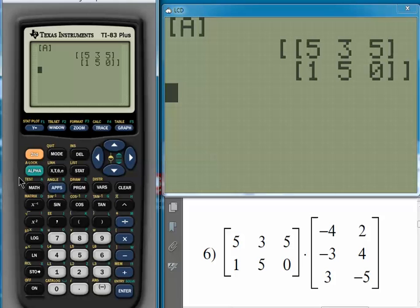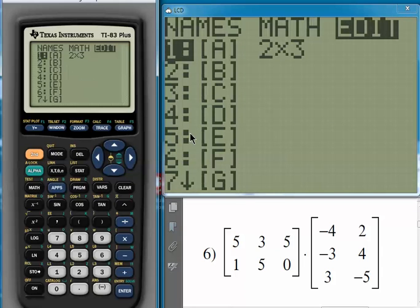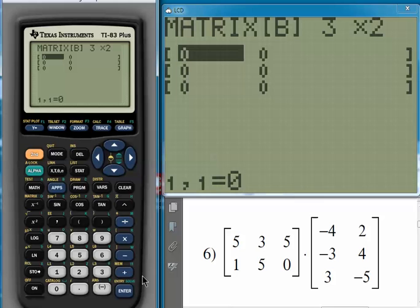Okay, so let's go ahead and enter matrix B. Press the second key, Matrix. We're going to arrow over to the Edit menu, and this time we're going to go down one, and we're going to put entries in B. Again, it starts off as a one by one, but this matrix is a three by two. Three by two. All right, now we've got two columns, three rows.